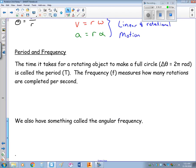The last thing I want to talk about in this video is period and frequency. The time it takes for a rotating object to make one full circle, so that's going through two pi radians, we call that the period. The frequency will measure how many rotations are completed every second.